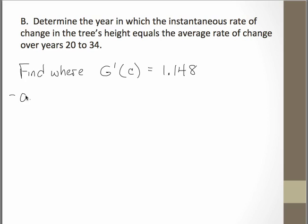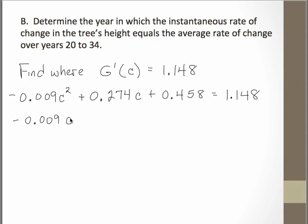So if we go ahead and find the derivative, we'll have a negative 0.009 and remember I'm going to use c, if you use t squared that's okay, plus 0.274 c plus 0.458 and that's equal to 1.148. So we need to subtract that 1.148 over to the other side. Because remember, if we're going to want to do quadratic formula, this quadratic does have to be set equal to 0. So when we subtract that away, we get a negative 0.69.